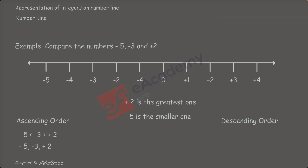Exactly in the same way, we may write the descending order of these numbers. Descending order means arranging the numbers from greatest to smallest. If we arrange the numbers from greatest to smallest: plus 2 is greater than minus 3, and minus 3 is still greater than minus 5. So, the descending order of the numbers is plus 2, minus 3, and minus 5. We have seen how to represent integers on the number line, compare them, and arrange them in ascending and descending order.